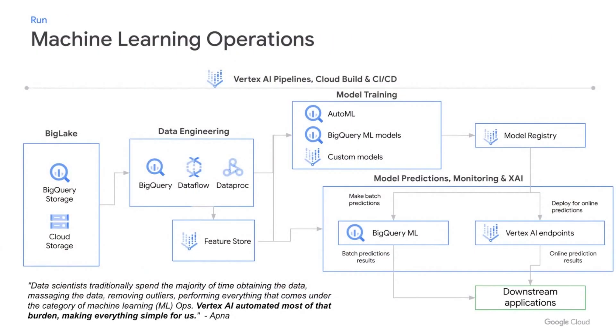That was crawling with your notebook environment and walking with your model training, development, and deployment. Taking it a step further — how do you run with machine learning? This is where you start thinking about orchestration and automation akin to an ML platform. You can add MLOps capabilities like CI/CD, a feature store for feature management and sharing, and Vertex AI pipelines to stitch together various operations into a single pipeline flow. Customer Apna says their data scientists traditionally spent the majority of their time obtaining data, massaging data, removing outliers — and Vertex AI automated most of that burden.